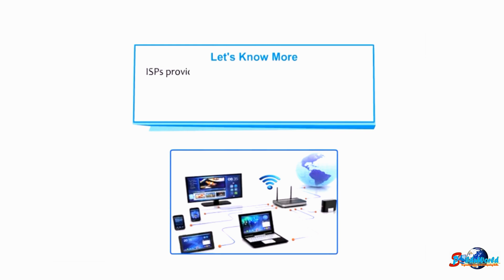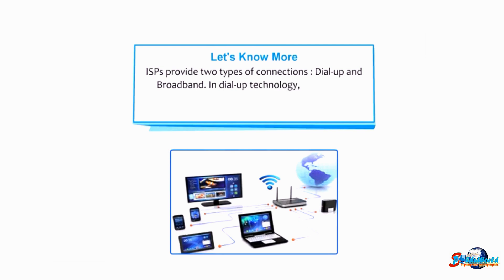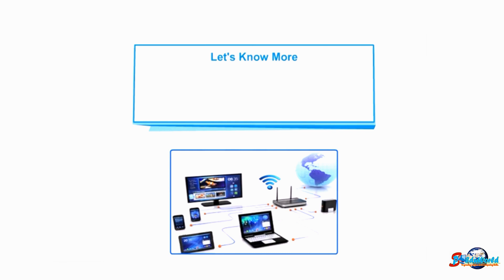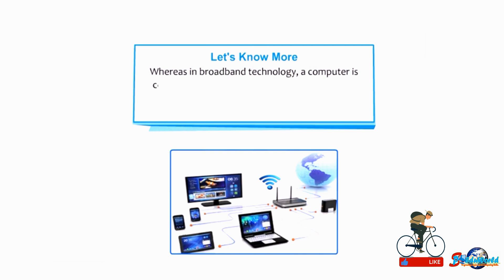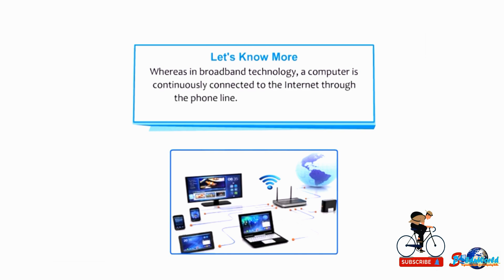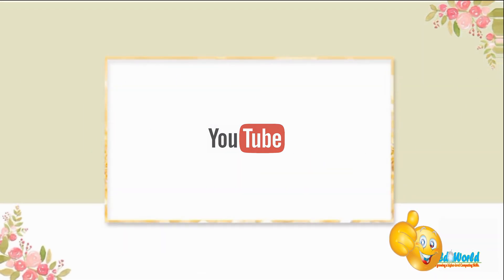ISPs provide two types of connections: dial-up and broadband. In dial-up technology, you have to dial a number to connect to the internet through an existing phone line. Whereas in broadband technology, a computer is continuously connected to the internet through the phone line, providing high-speed internet access.